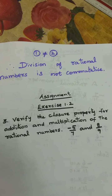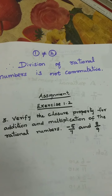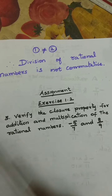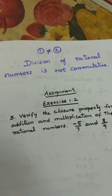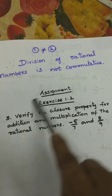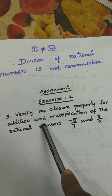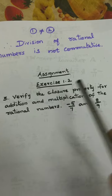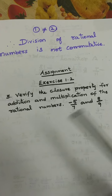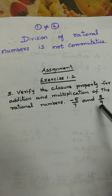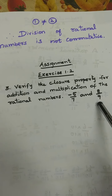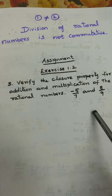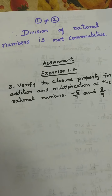I have given one assignment in exercise 1.2, third sum. You have to write all these sums in the classwork note. I will give this assignment sum in the assignment group. You have to do the sum in a note, take a photo, and send it to me. I will correct it and return to you. Don't forget — you have to write and send it compulsorily. Thank you. Have a nice day.